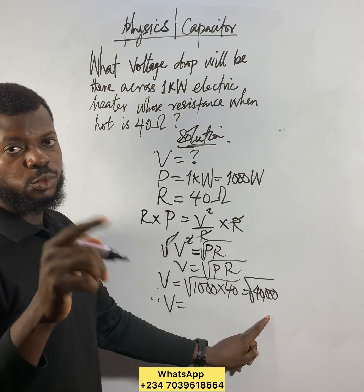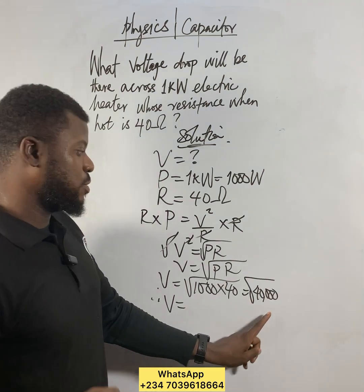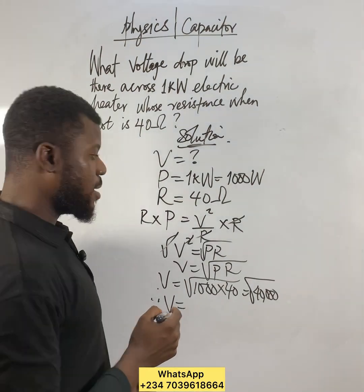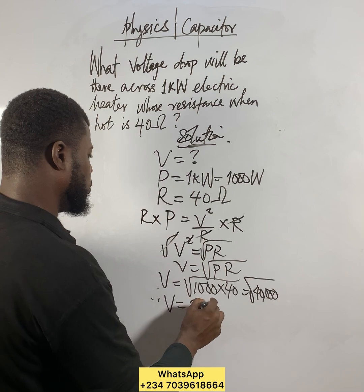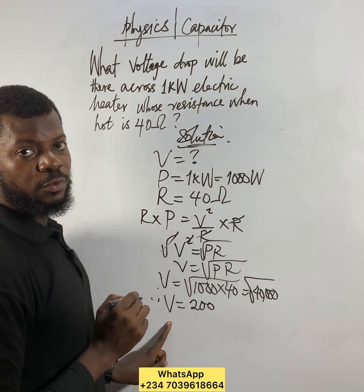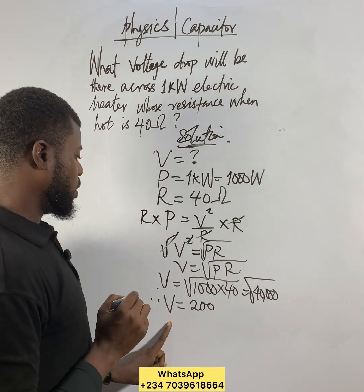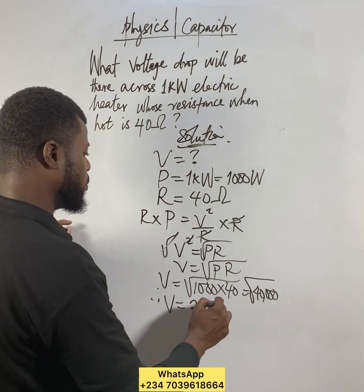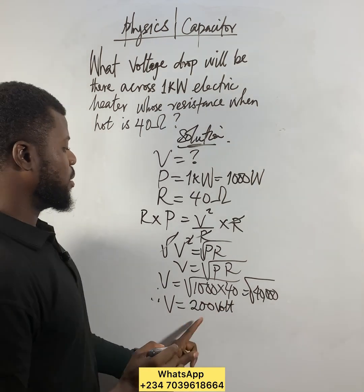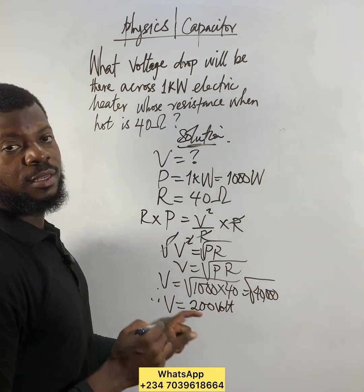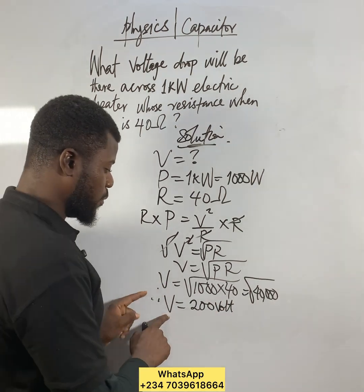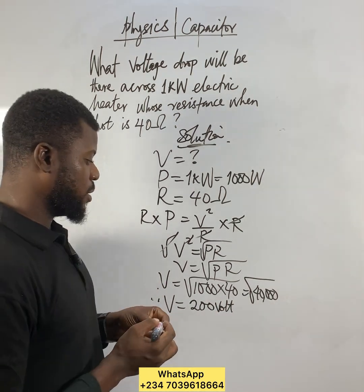Two hundred times two hundred gives you forty thousand, so the square root of forty thousand is two hundred. Therefore V equals 200 volts — that's the answer. The unit is volts, written as a capital or small letter V.